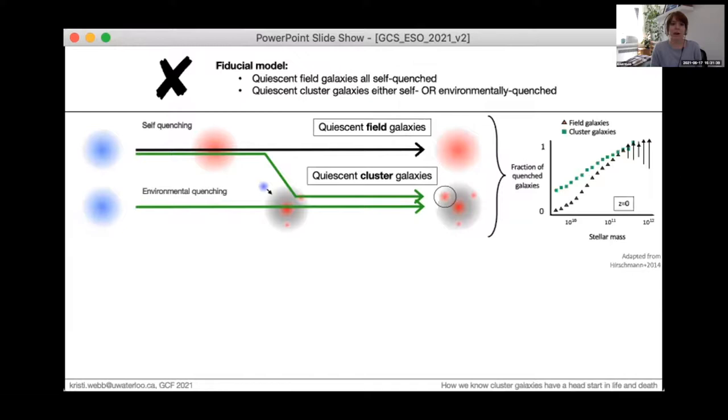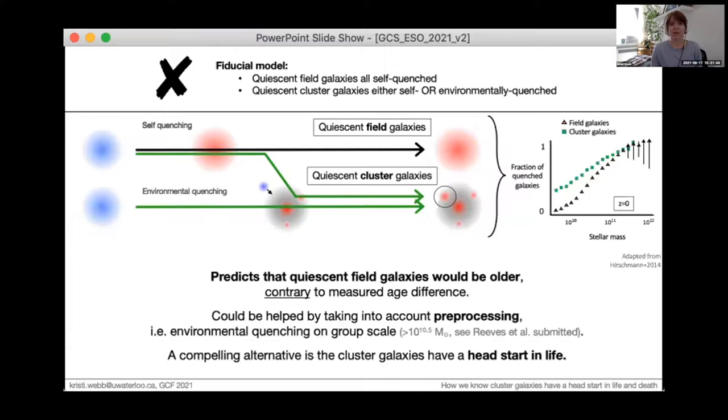However, because of the relative timescales of self and environmental quenching efficiencies, the consequence is that the population of quenched field galaxies would be older than the population of quenched cluster galaxies, contrary to the measured age difference. This follows because the second quenching channel for cluster galaxies supplies recently quenched galaxies, lowering the average age of that population.